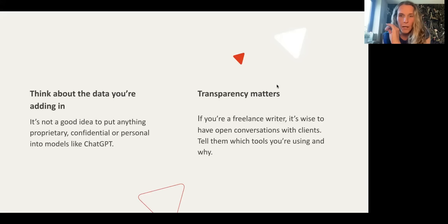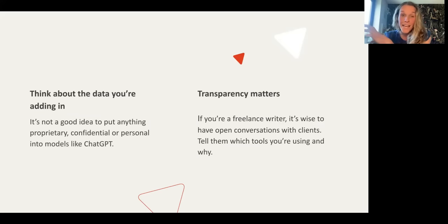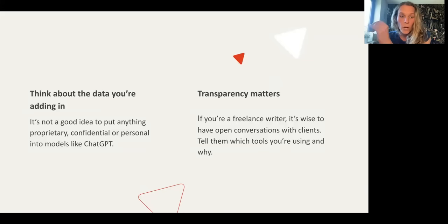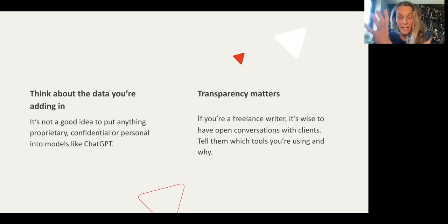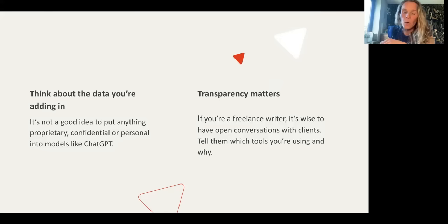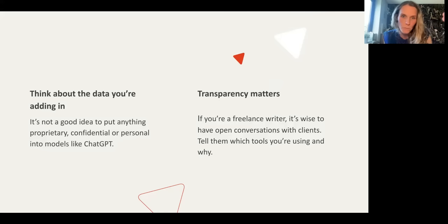Considerations and ethics — four things you should think about when using ChatGPT. First, think about the data you're adding in. It's going to be better if you put information in, but please be careful what you put in. Don't put in anything proprietary, confidential, or personal into models like ChatGPT, because these models are constantly learning and will take the information you put in and use it to train. There's been an issue with Samsung recently where confidential information ended up coming out in someone else's output.